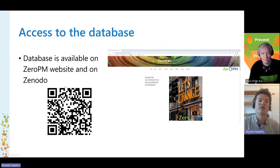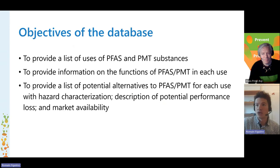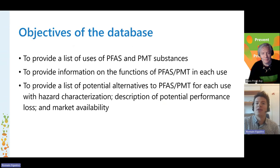The main objective of this database is to provide, first off, a list of uses of PFAS and persistent mobile and toxic substances, as well as information on the functions provided by those substances in each identified use. The second step is to provide a list of potential alternatives capable of providing similar functions for each use, with a hazard characterization, as well as a description of potential loss in performance and market availability of the alternative.